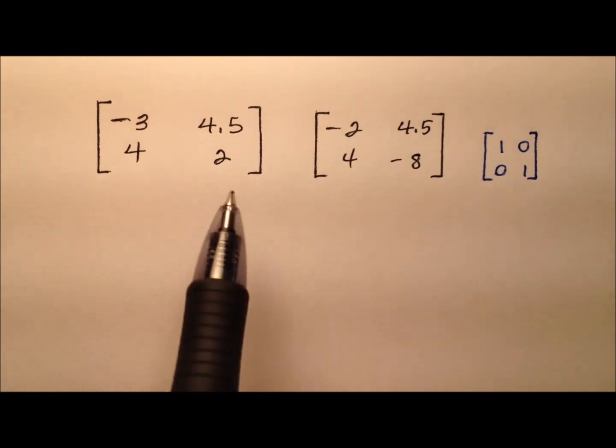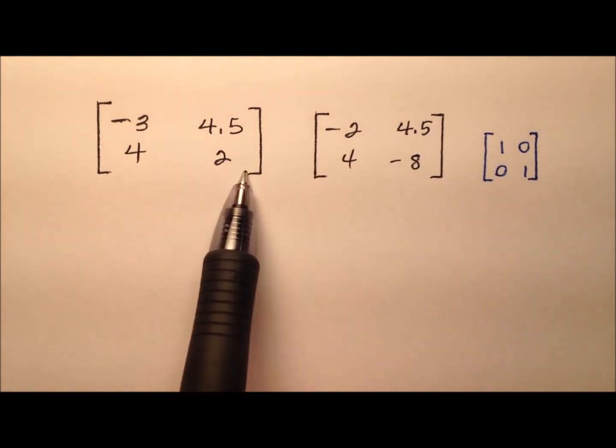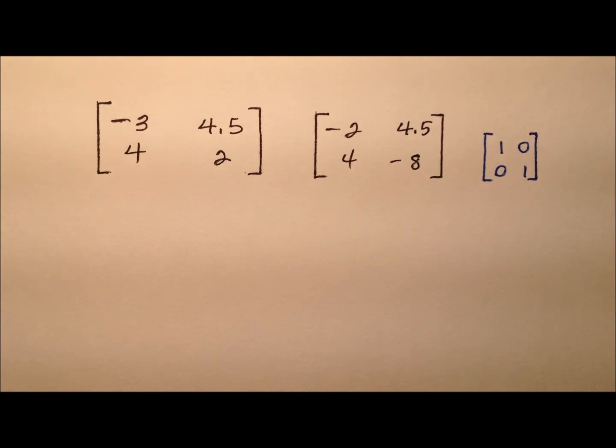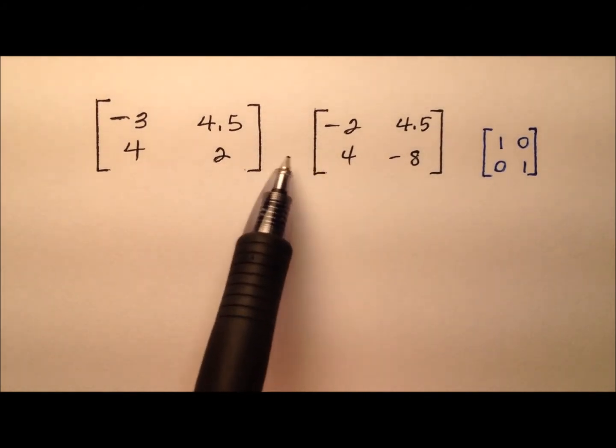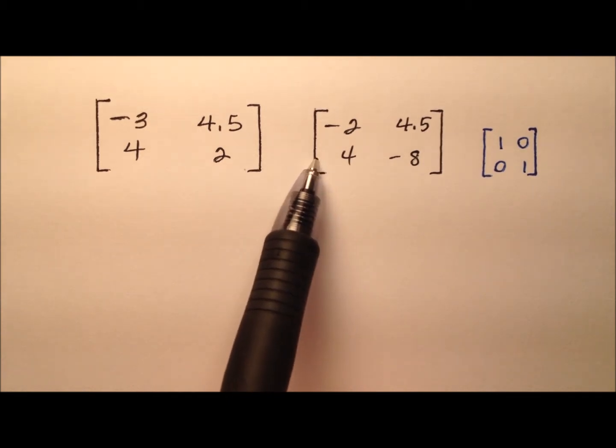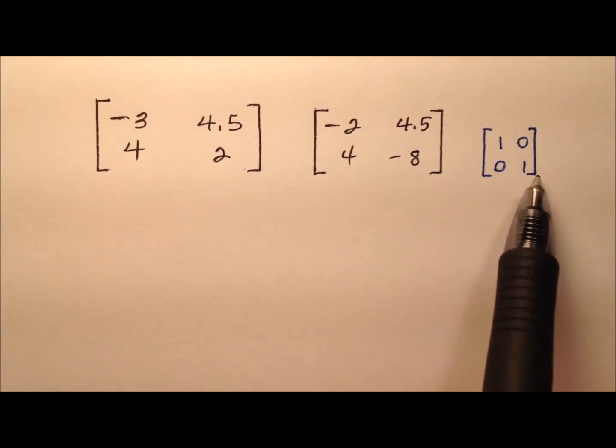In this example, we are going to determine whether or not these two square matrices are inverses of one another. So the way we can do that is by multiplying them together and seeing if this product matrix is going to be the identity matrix.